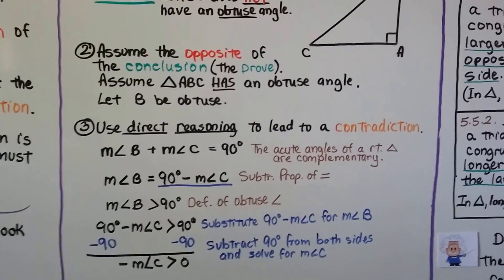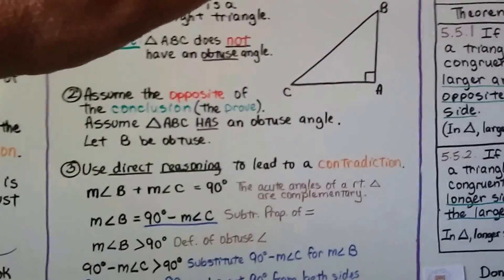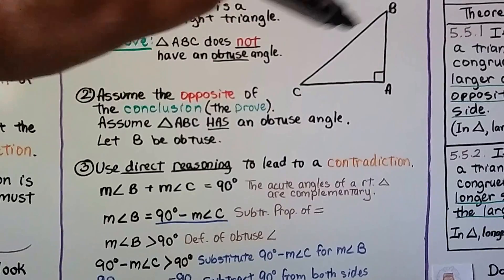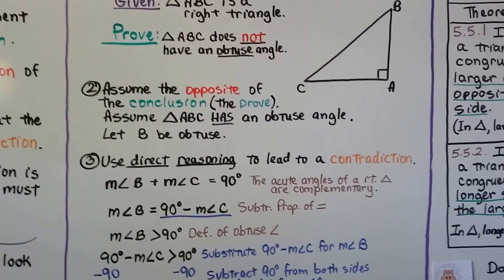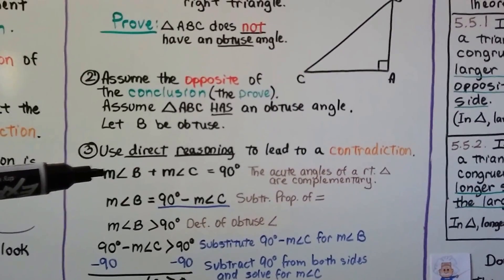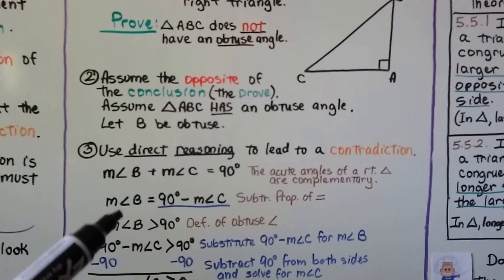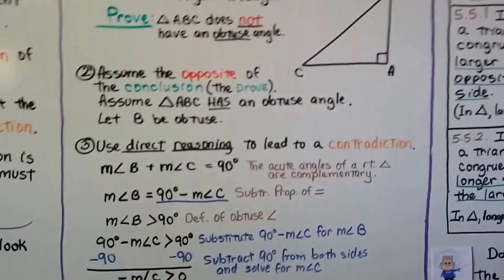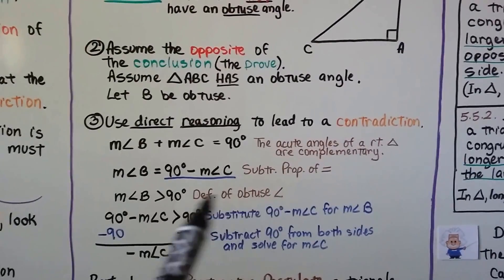Number three, we use direct reasoning to lead to a contradiction. If angle A is 90 degrees, we know by the triangle sum theorem that angle B plus angle C must also equal 90 degrees, so the whole thing equals 180 degrees. So the measure of angle B plus the measure of angle C equals 90 degrees — the acute angles of a right triangle are complementary. The measure of angle B equals 90 degrees minus the measure of angle C, by the subtraction property of equality. And the measure of angle B is greater than 90 degrees by the definition of an obtuse angle.